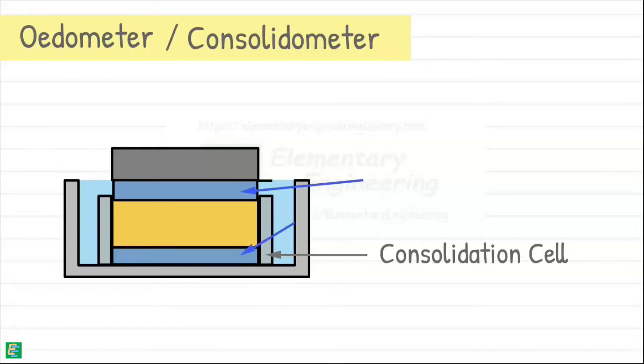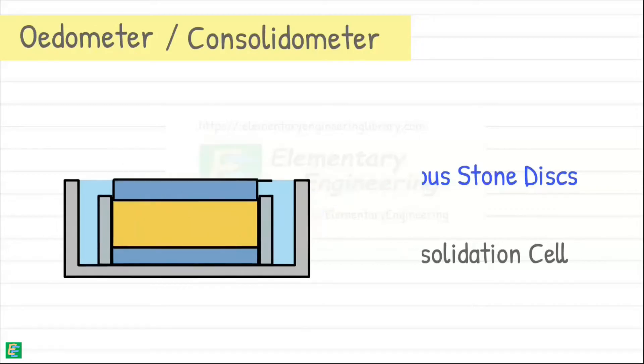Top and bottom of the sample are equipped with porous stone disks. These disks enable two-way vertical drainage, allowing water to flow freely in and out of the soil. Keep in mind that it is a schematic diagram. Actual system is a bit different.